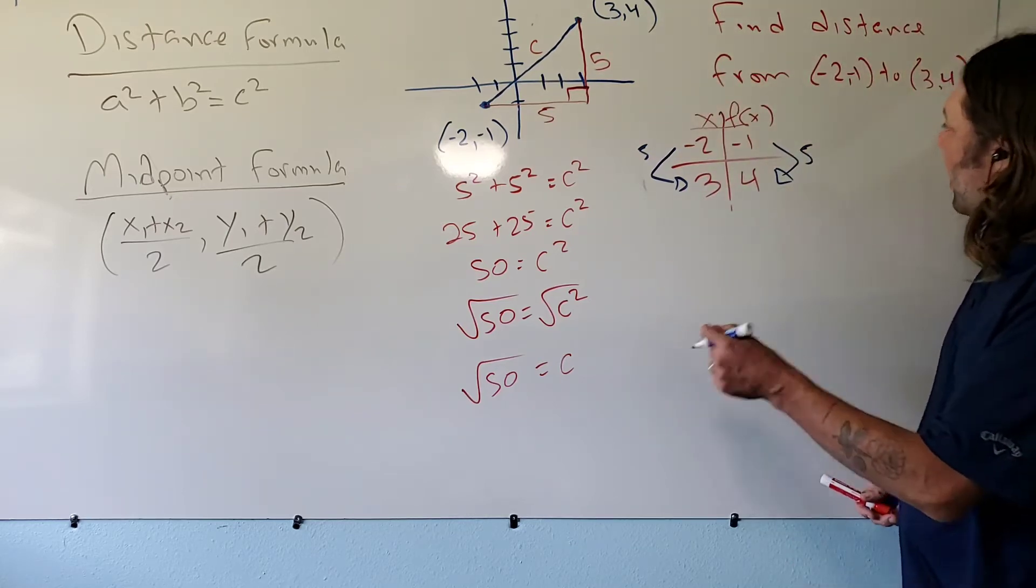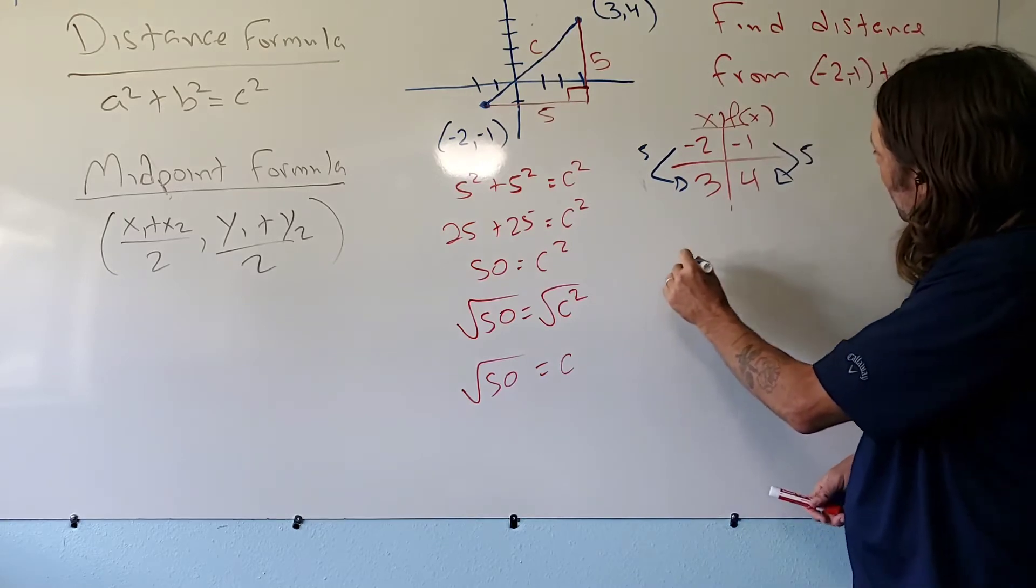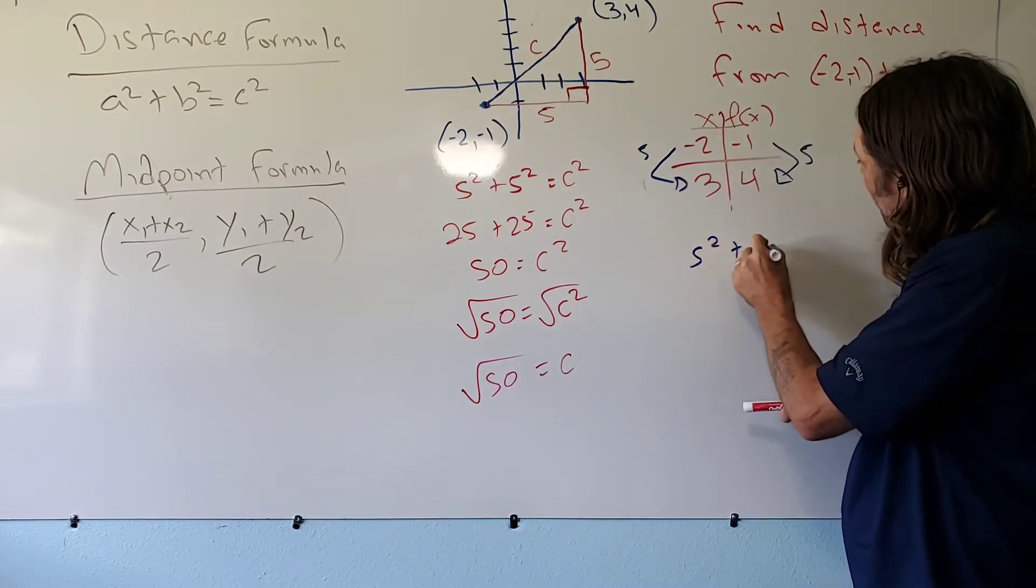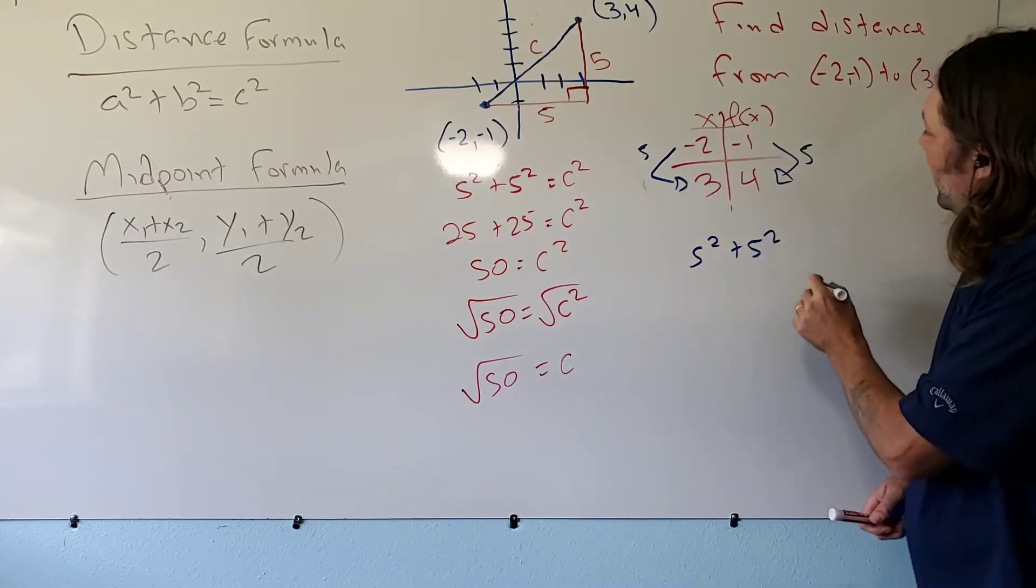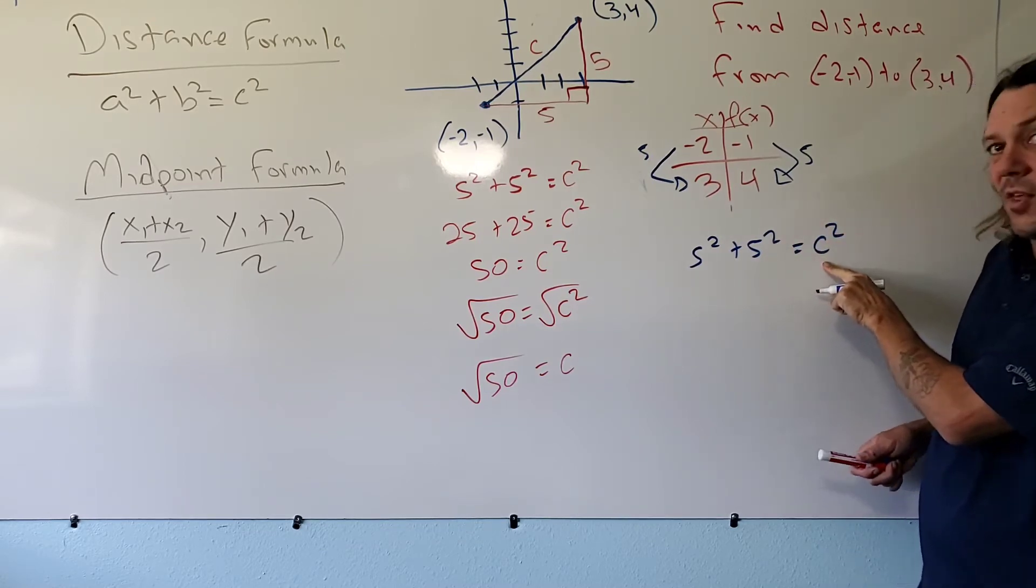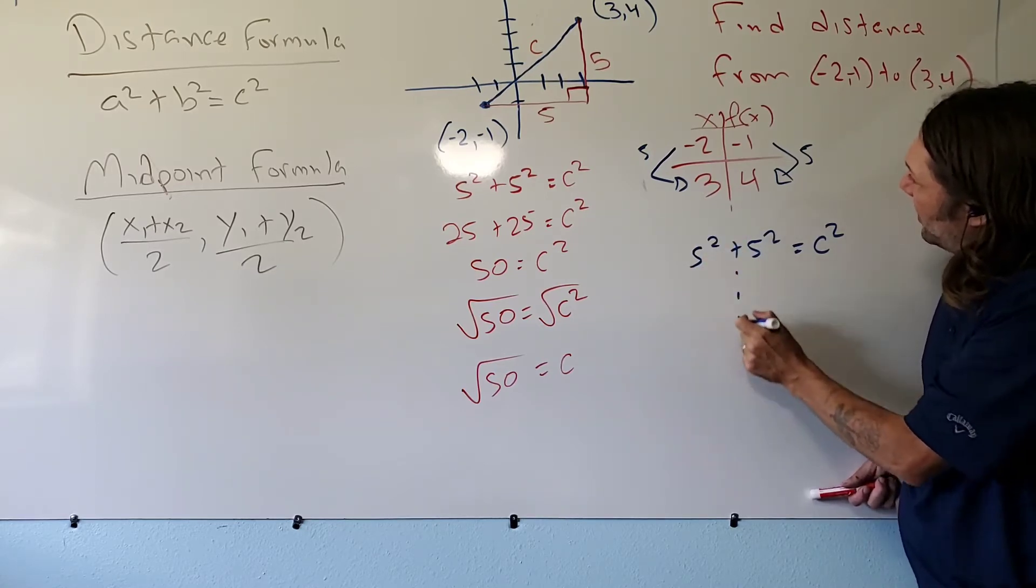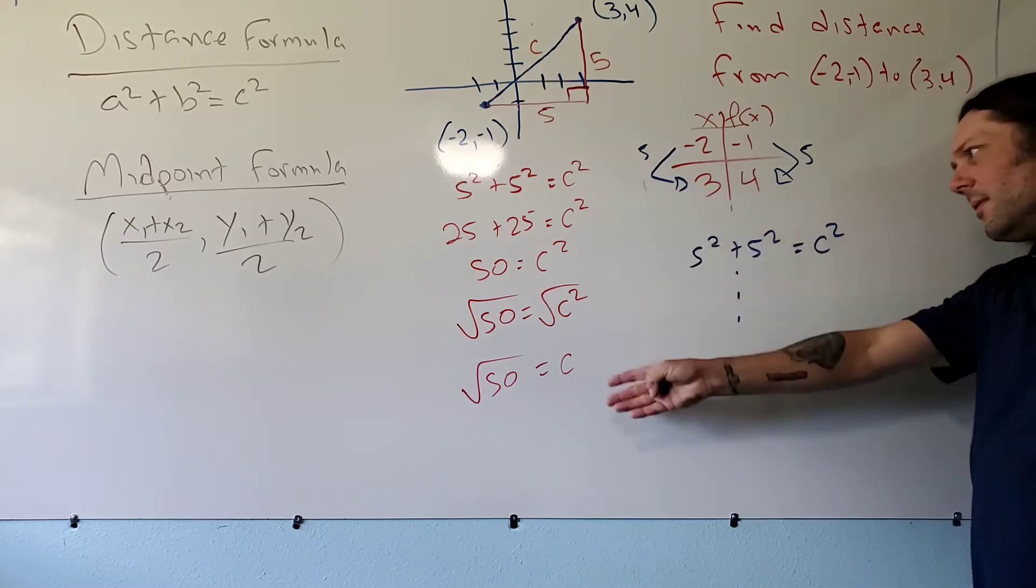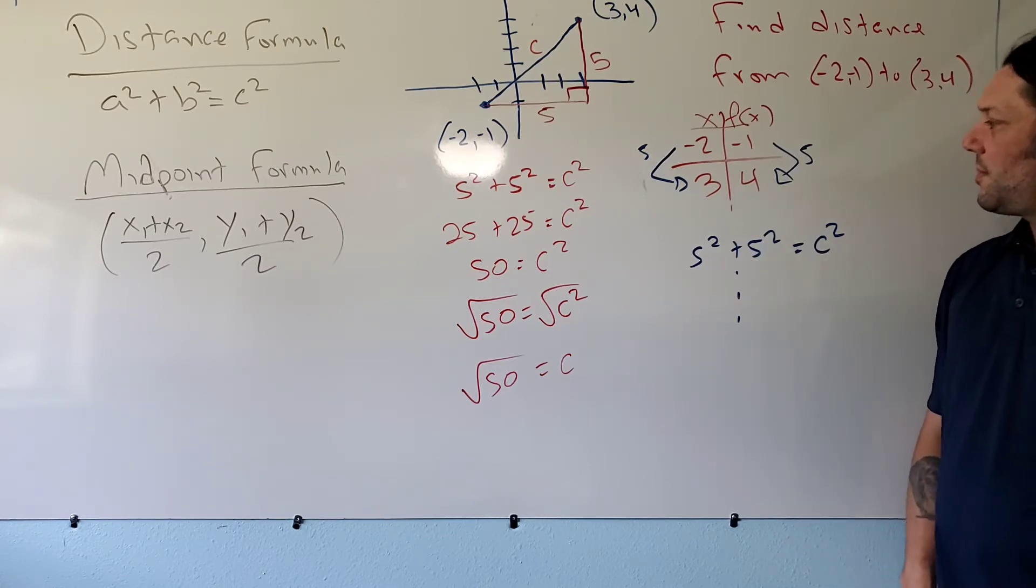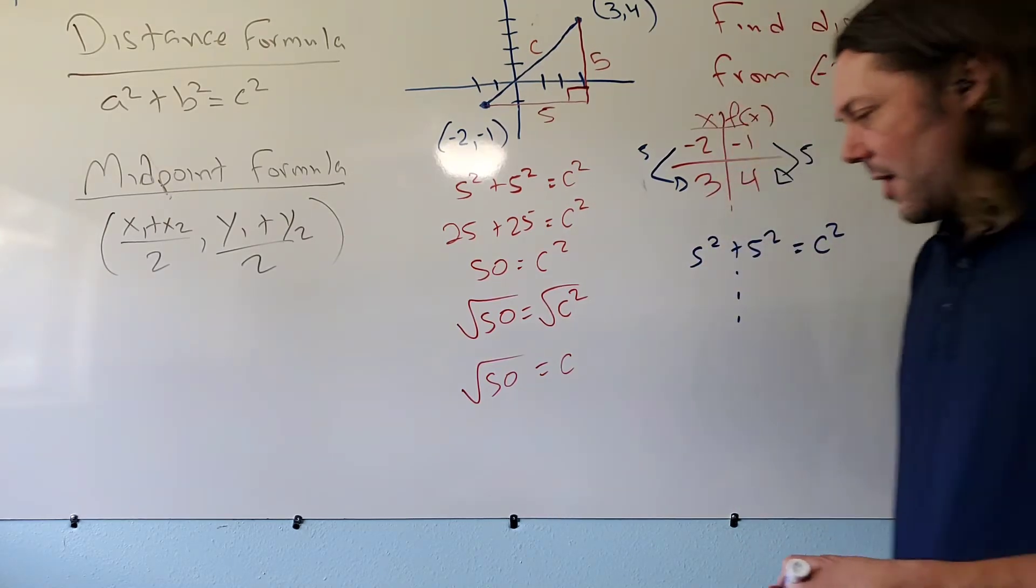So this is another way to find this horizontal length. Remember, x is a horizontal description. This 5 is my vertical change. So to go from this height to this height, I have to go up 5. So now we have our two numbers in our equation. So we can very quickly set up our equation as 5 squared plus 5 squared, and that we can say is equal to our unknown diagonal length c squared.